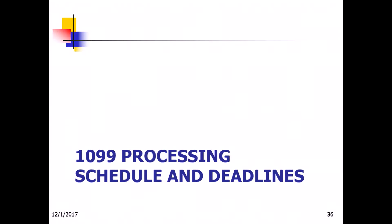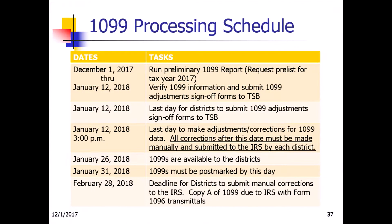Now we're going to go over the 1099 schedule and deadlines. In the PowerPoint slides there's a schedule here — this one has been updated. There was a typo in the first box where it says run 1099 preliminary reports; it should request the pre-list for tax year 2017. Make sure you see 2017. The cutoff for doing that is January 12th of next year.